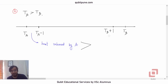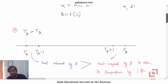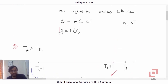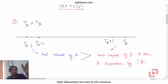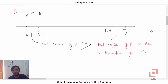The heat released by A will be greater than the heat required by B to raise its temperature by one kelvin. This is because if Ta is greater than Tb, the heat released when A's temperature falls by one kelvin exceeds what is needed to raise B's temperature by one kelvin from Tb. We can apply this same argument for successive temperatures and arrive at a conclusion.